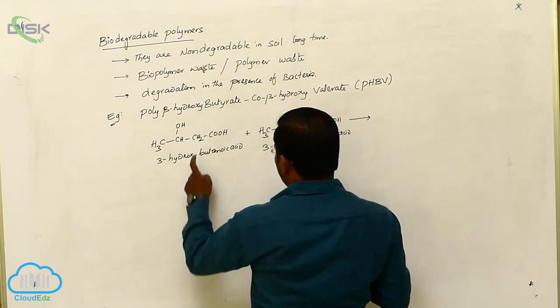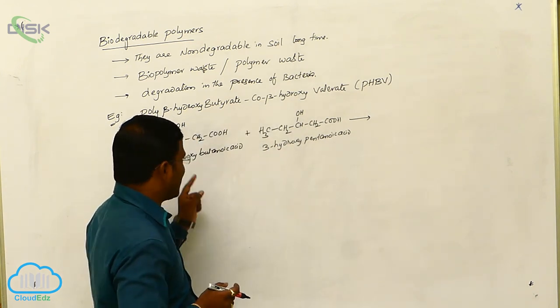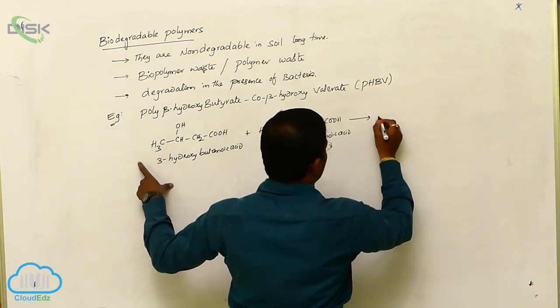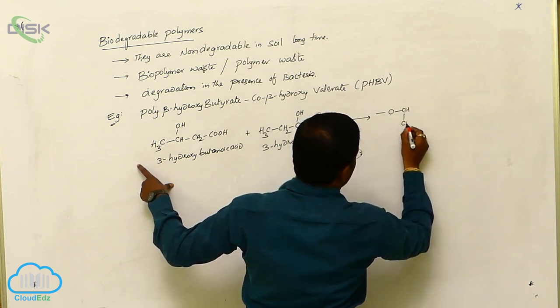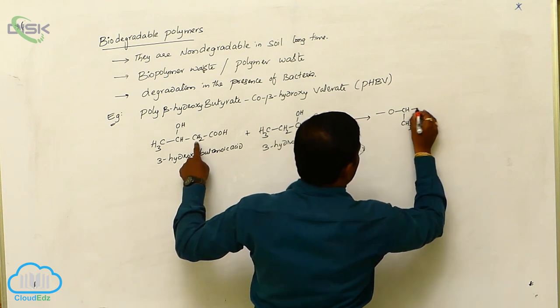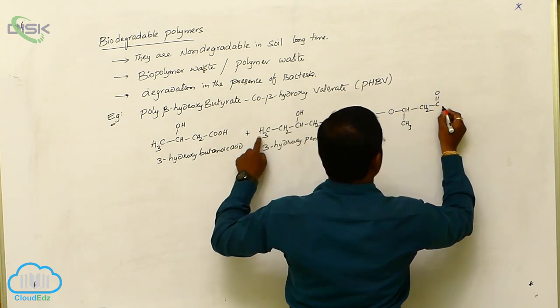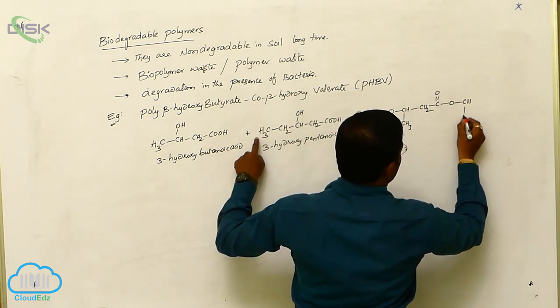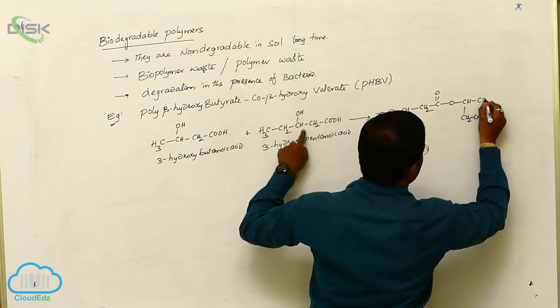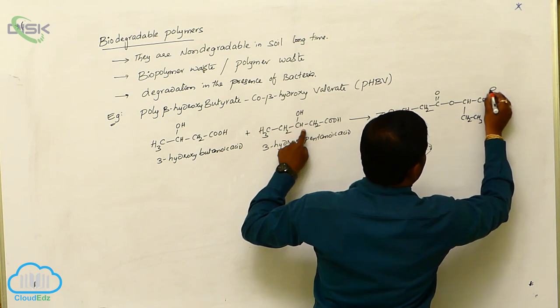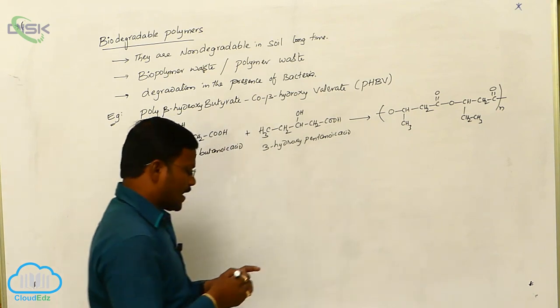Generally, with the loss of water, condensation polymerization is expected between these two to produce O, CH, CH3, CH2, C double bond O, O, CH, CH2, CH3, connected to CH2, C double bond O. A long chain will develop in the laboratory.